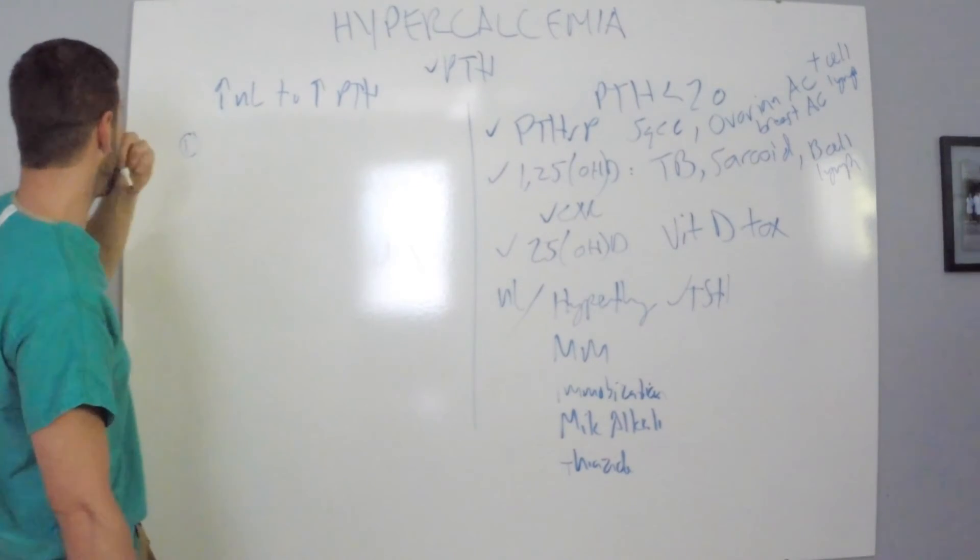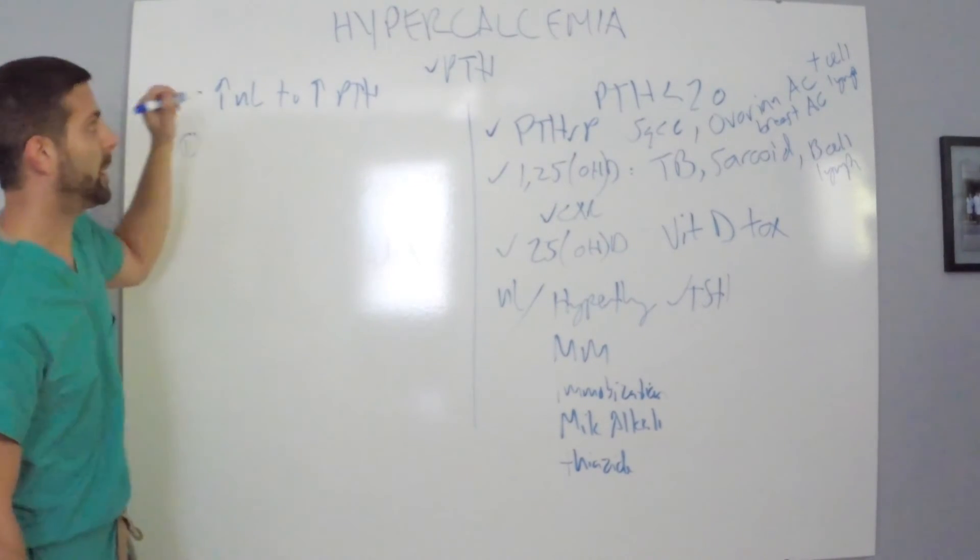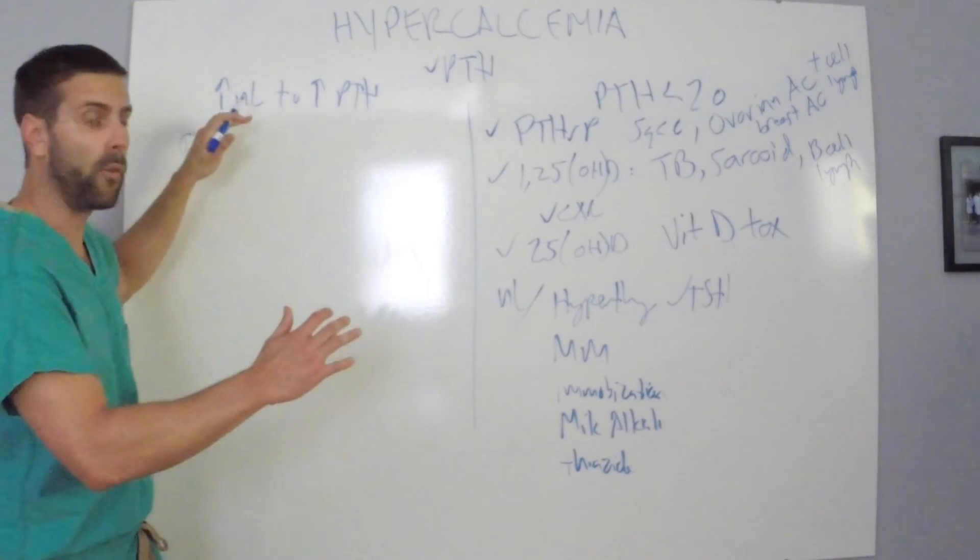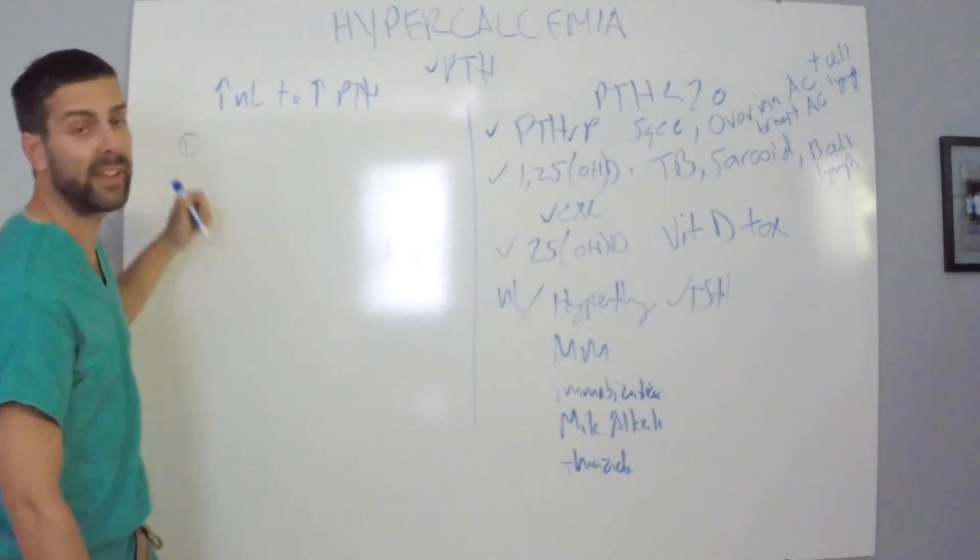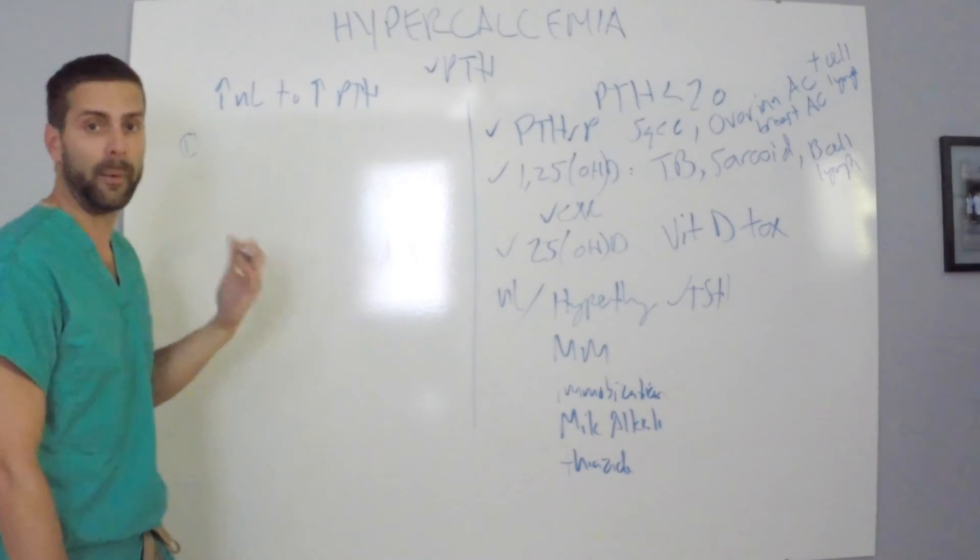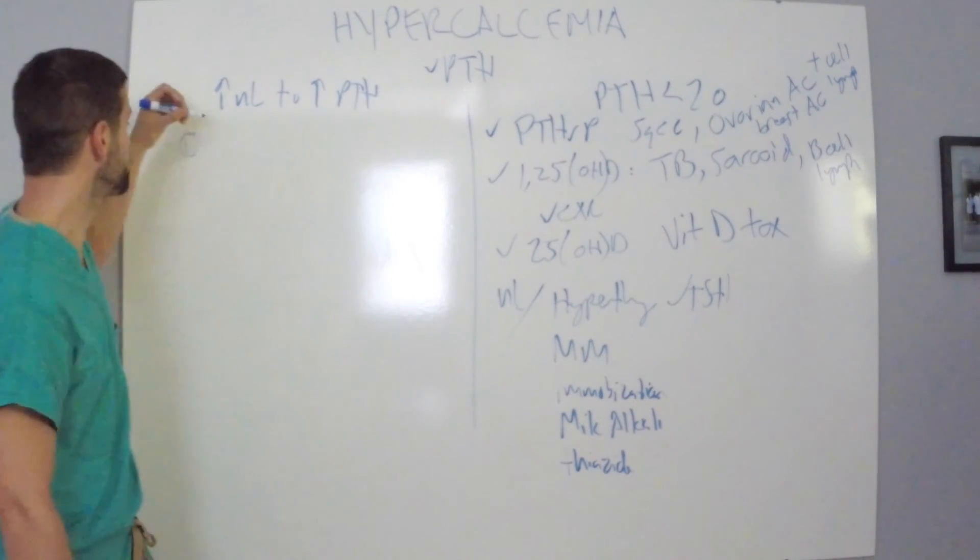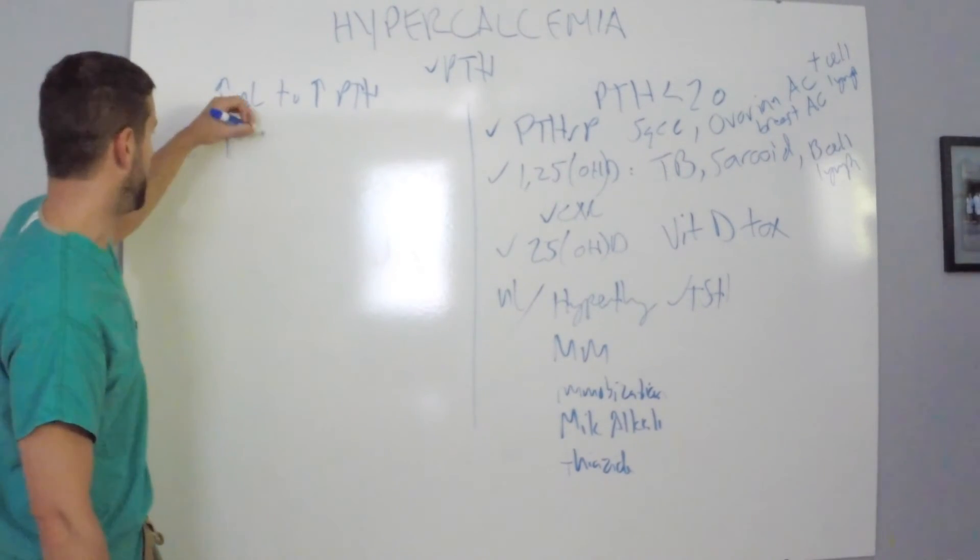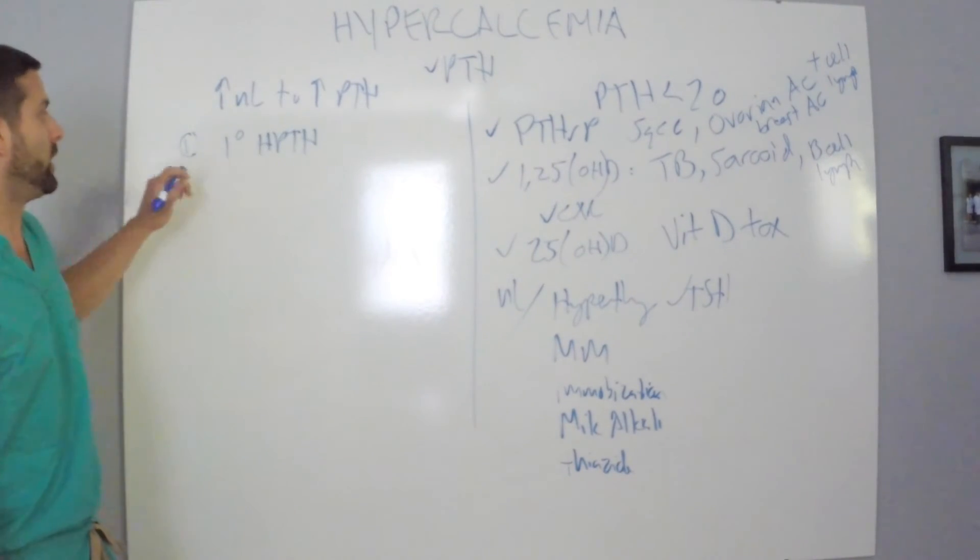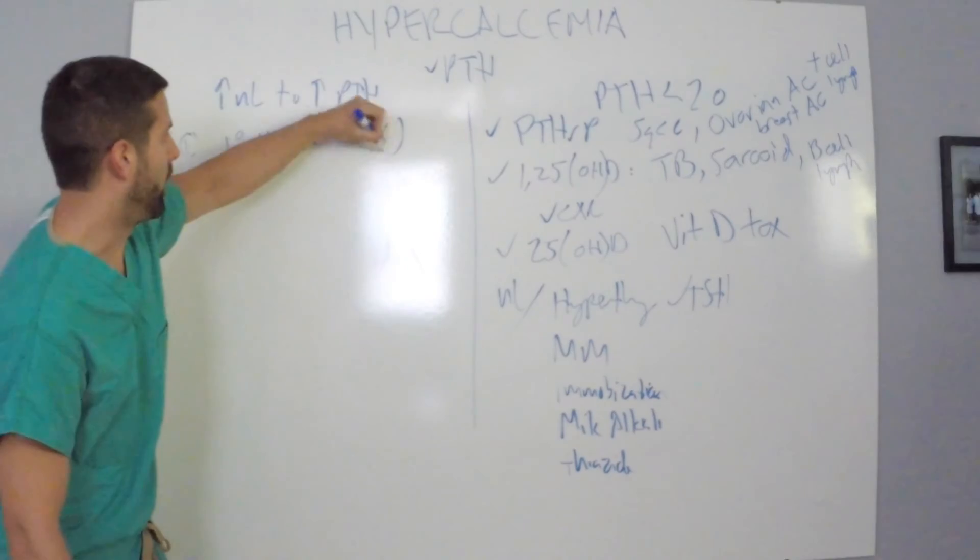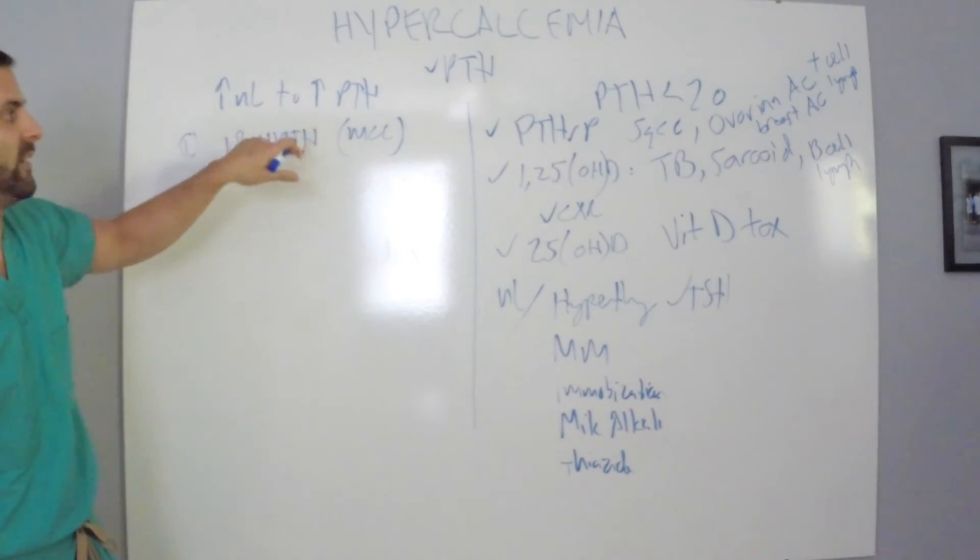Because the most common cause of somebody to be hypercalcemic overall is for them to have an adenoma in their parathyroid glands. So, primary hyperparathyroid hormone. This is the most common cause of people who have normal to elevated PTH.